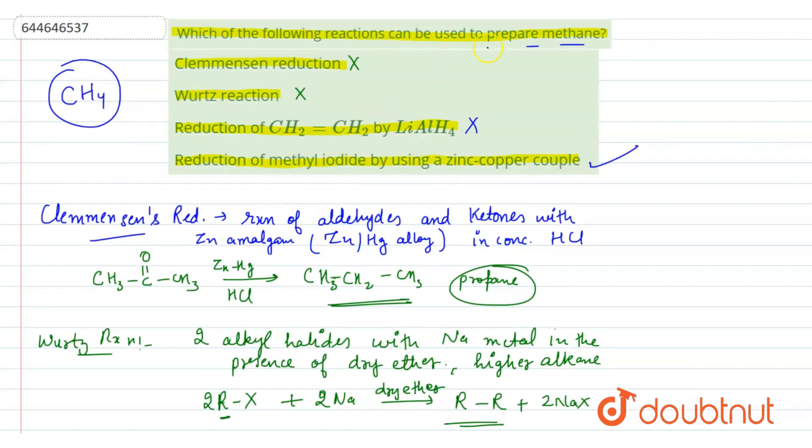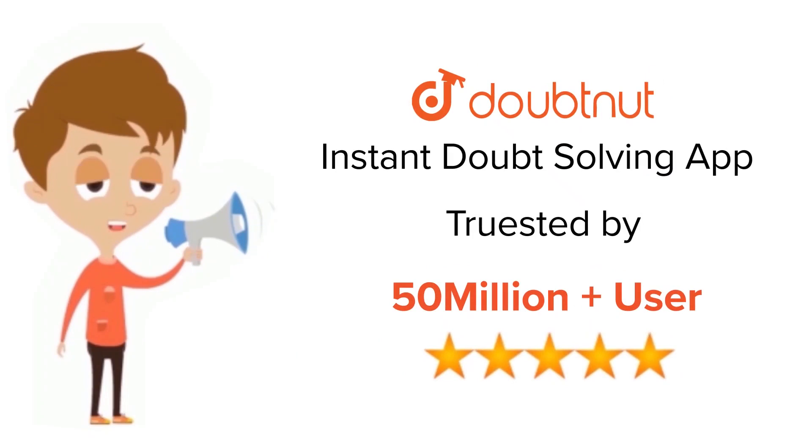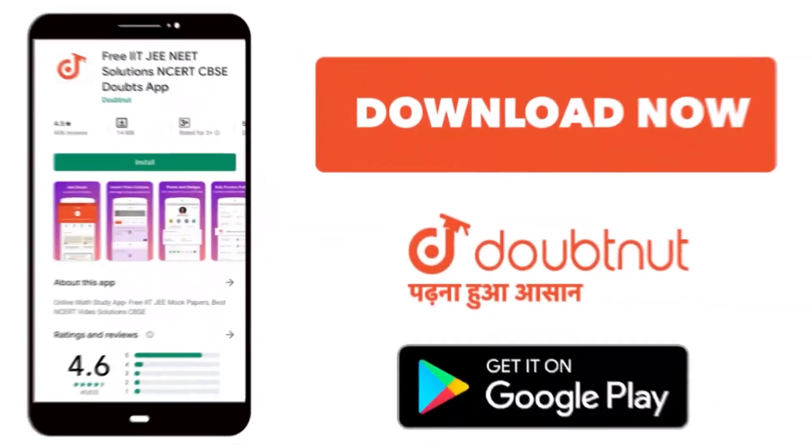Methane is formed with the fourth reaction, that is reduction of methyl iodide by using zinc-copper couple. This is the correct answer in which the reaction can prepare methane, that is the fourth option. For class 6 to 12, IIT-JEE and NEET level, trusted by more than 5 crore students, download Doubtnut today.